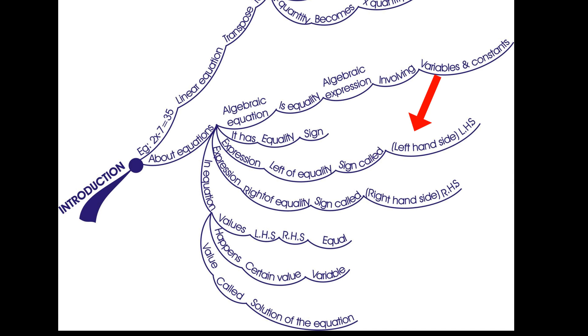The expression on the left of the equality sign is called LHS, that is left hand side of the equation. The expression on the right hand of the equality sign is called RHS, that is right hand side of the equation.